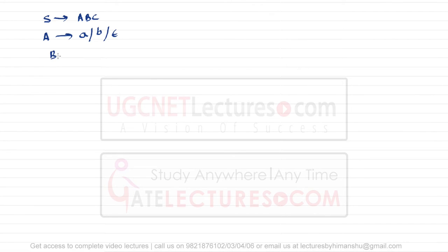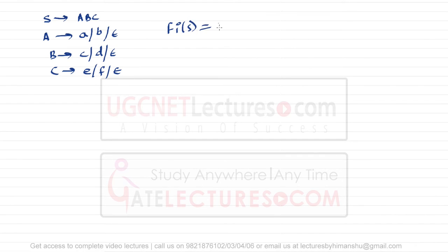Now assume S derives A B C, where A derives small a, or small b, or epsilon; B derives small c, or small d, or epsilon; and C derives small e, or small f, or epsilon. If you try to find FIRST of S, there is a complication because A, B, and C all contain epsilon. We can replace A by small a or small b, so those will be in FIRST of S.